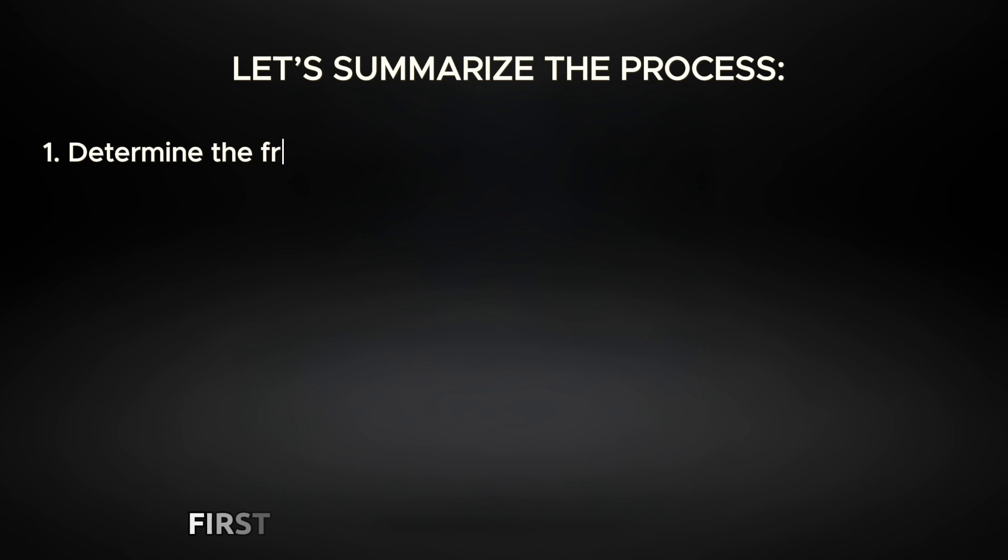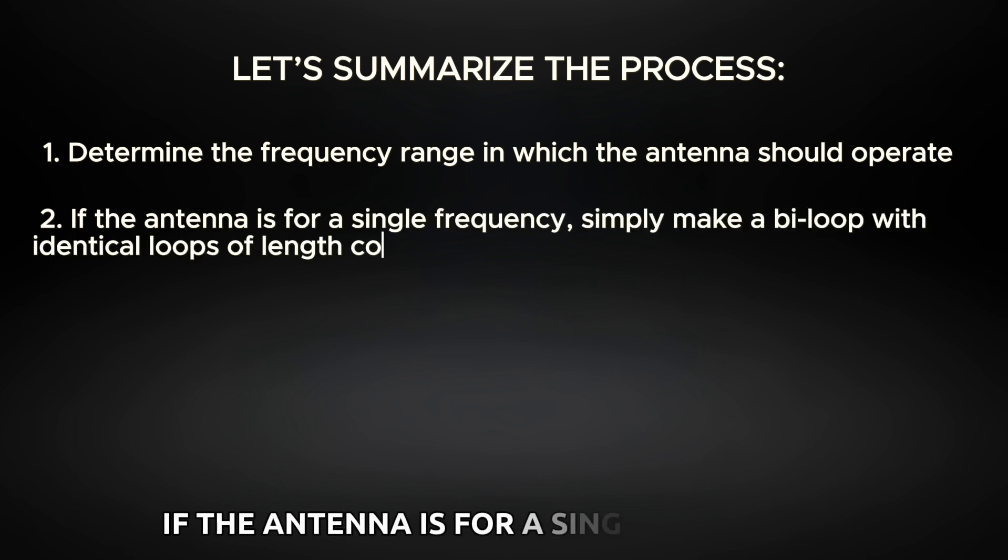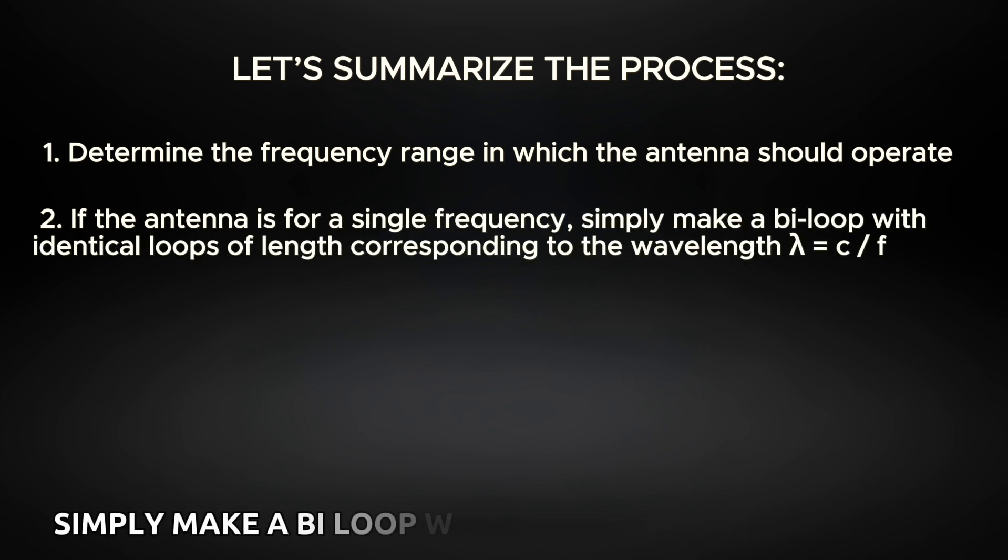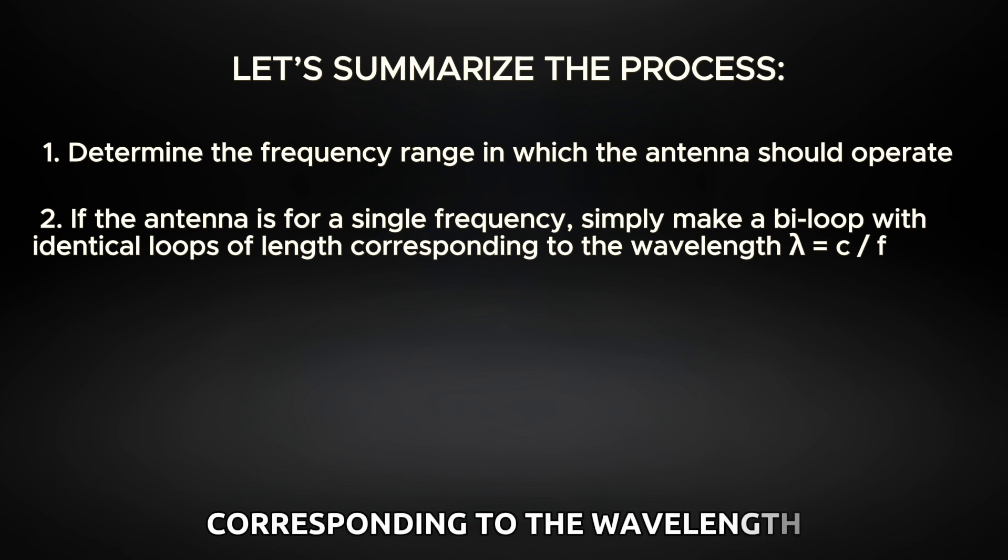First, determine the frequency range or specific frequency for the antenna. If the antenna is for a single frequency, simply make a bi-loop with identical loops of length corresponding to the wavelength lambda equals c divided by f.